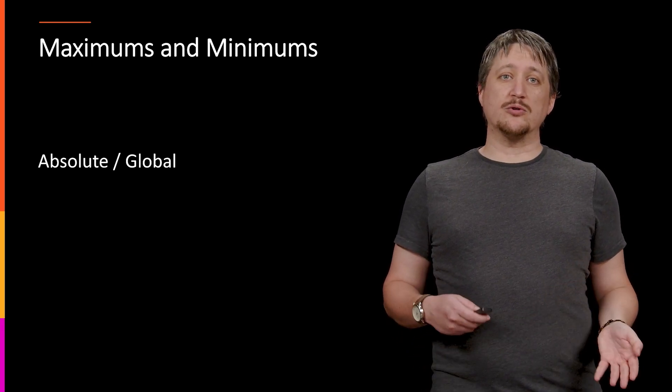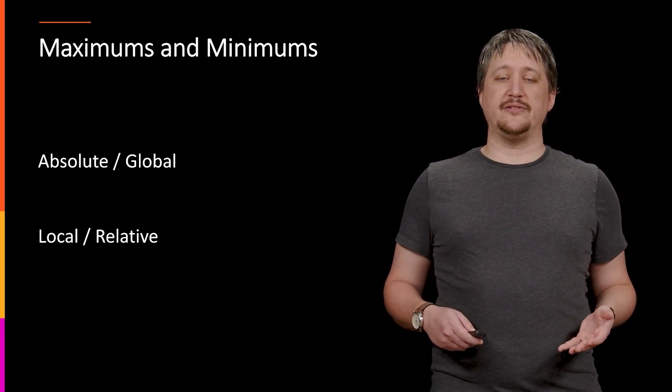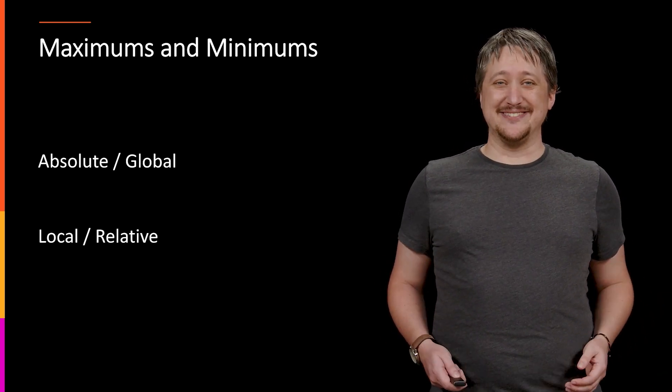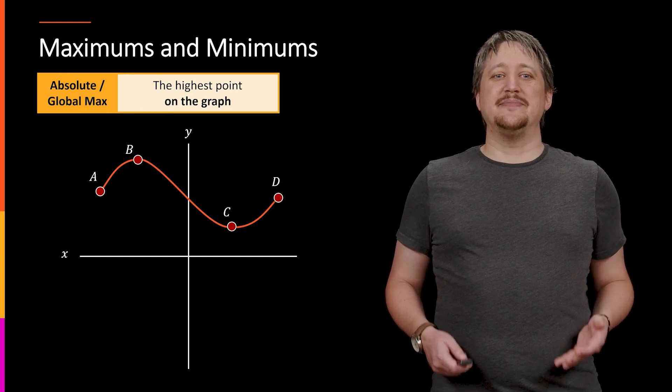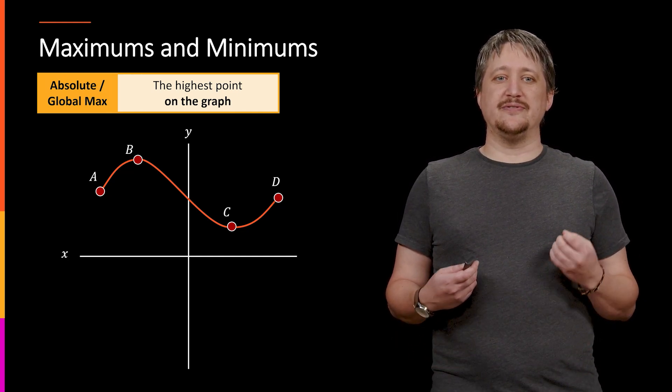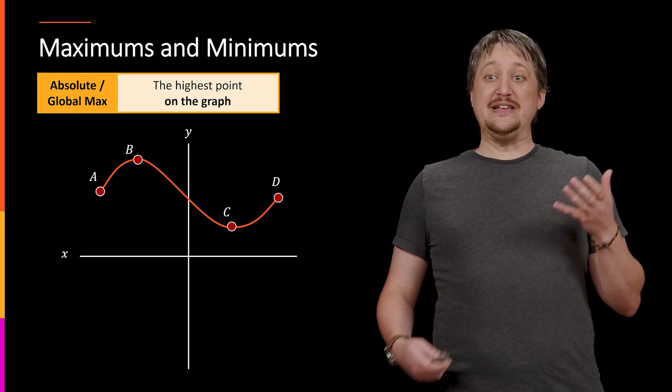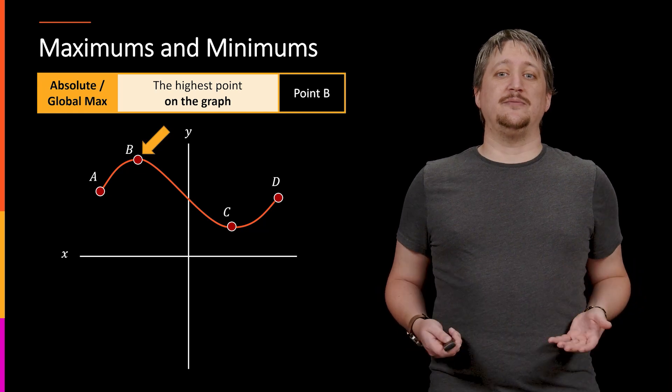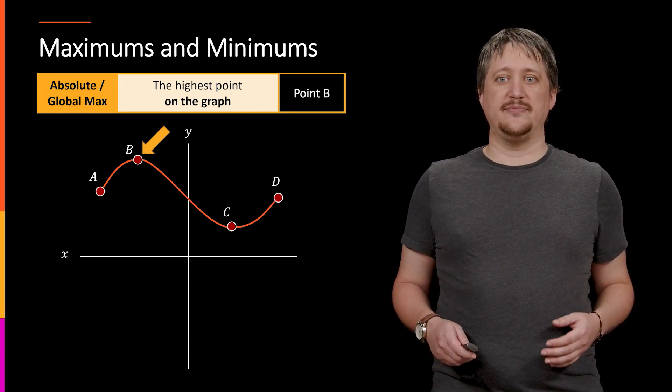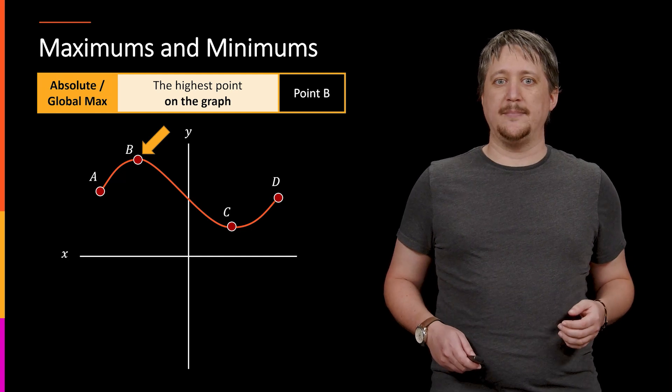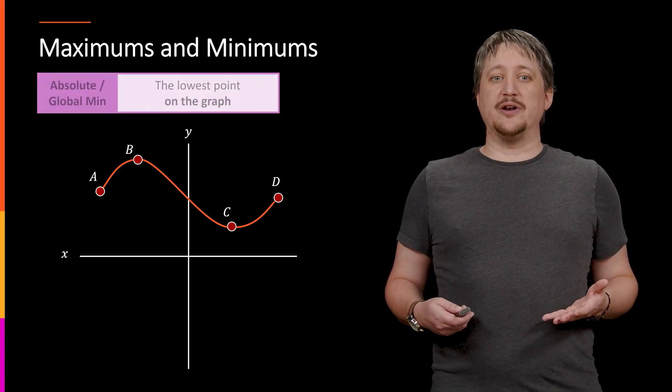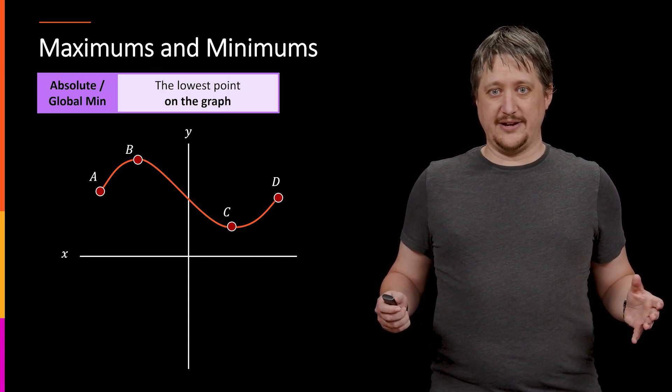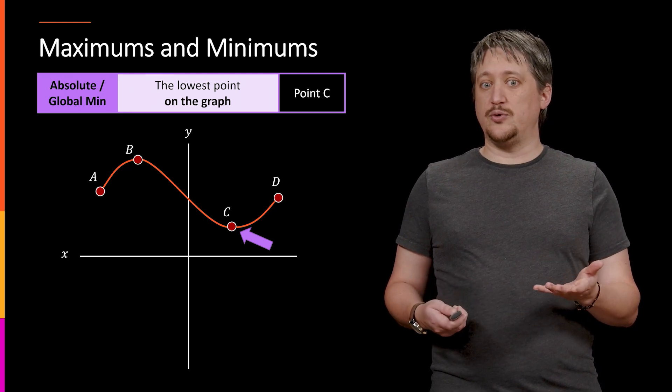So we can talk about absolute or global and local or relative. But it would be helpful to know what these corresponding things mean. So if we look at a graph, absolute or global extrema, these are the extreme values of the entire graph. Absolute or global maximum, that's going to be the highest point on the entire graph. So here, point B. Likewise, if we wanted the absolute or global minimum, that's going to be the lowest point on the entire graph. So here we would have point C.